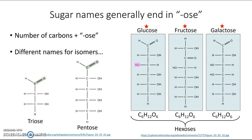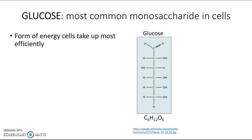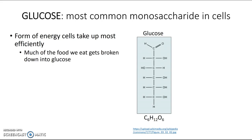Glucose is considered important because it's the most common monosaccharide in living cells. It's the form of energy that our cells take up most efficiently — you could say it's the sugar our cells like the most. A lot of what we eat gets broken down into glucose. When people refer to blood sugar, what they're actually referring to is the amount of glucose in their blood.